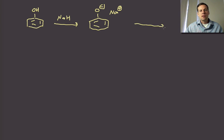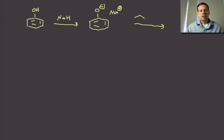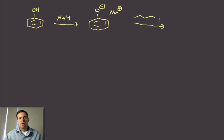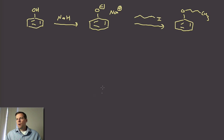And then we can throw in whatever alkylating agent we want. Maybe we'll throw in butyl iodide there. And then we can alkylate that phenolic oxygen. So that's a completely sufficient way to make aryl ethers as well.